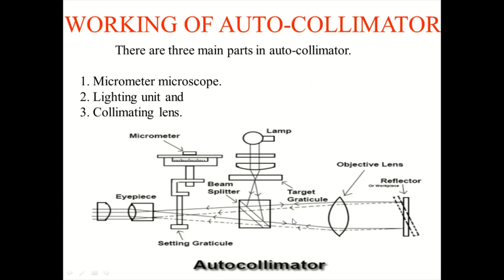This is working of an autocollimator. There are three kinds of instruments here. The micrometer will be there, here the lamp, this is the objective lens, this is the target graticule, this is the beam splitter, this is the eyepiece. Here only you can see this one.